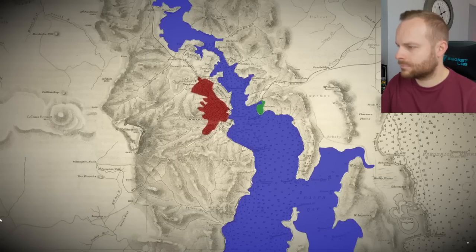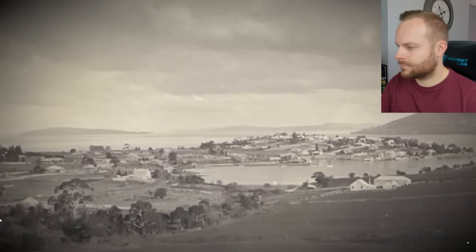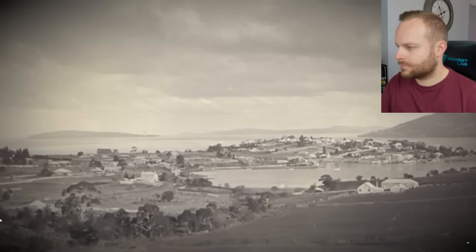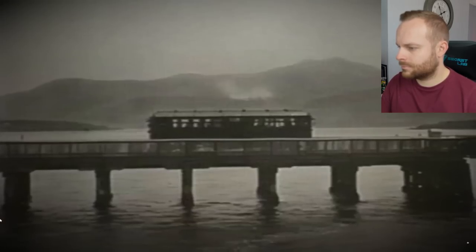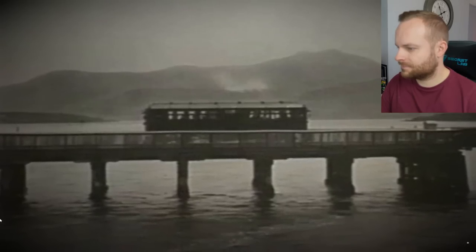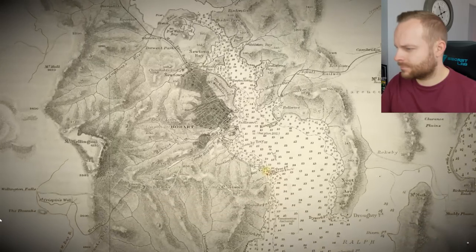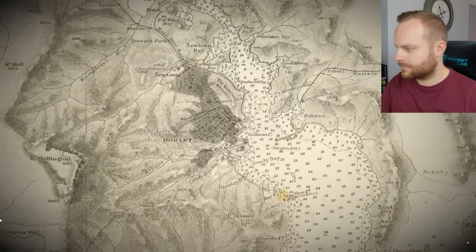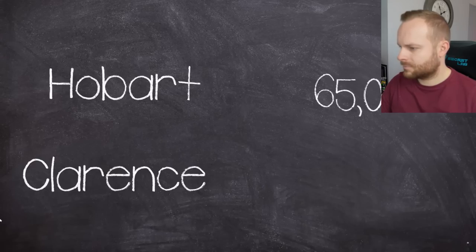The suburb of Clarence on the eastern side of the Derwent had developed at a much slower pace than the western city and its suburbs. Originally, the city had a bridge built in 1830, roughly 20 kilometres upstream from the eastern shore suburbs. This led to a lopsided development of the city's major population centres. In 1942, Hobart and its suburbs had a population of 65,000 on the western shore, and in comparison, Clarence on the east only had around 4,400.